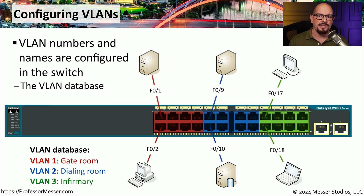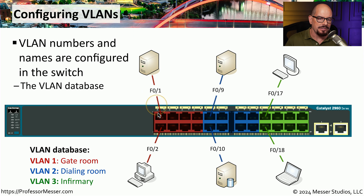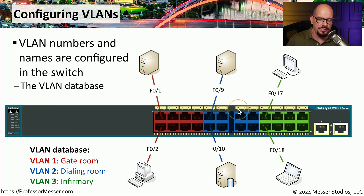Instead of colors, VLANs are defined by number. So in this switch, we have a VLAN 1, a VLAN 2, and a VLAN 3. There are devices connected to interfaces configured for VLAN 1, other devices connected to interfaces configured for VLAN 2, and still other devices connected to interfaces that will only communicate on VLAN 3.